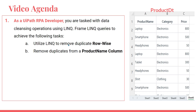First, utilize LINQ to remove duplicate rows row-wise. What exactly is row-wise? We are going to learn. Also, remove duplicates from a product name column — so how can you target a specific column to remove duplicates? That also we are going to learn. Your product data table looks something like this, and we will frame the LINQ query. This will be very interesting, so without wasting any further time, let's move on.